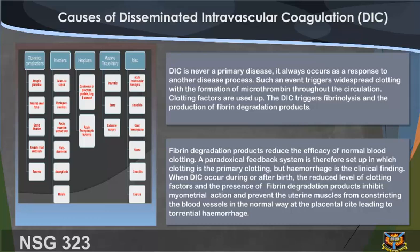DIC is never a primary disease; it always occurs as a response to another disease process. Such an event triggers widespread clotting with the formation of microthrombi throughout the circulation. Clotting factors are used up. The DIC triggers fibrinolysis and the production of fibrin degradation products. Fibrin degradation products reduce the efficacy of normal blood clotting, creating a paradoxical feedback system in which clotting is primary but hemorrhage is the clinical finding.